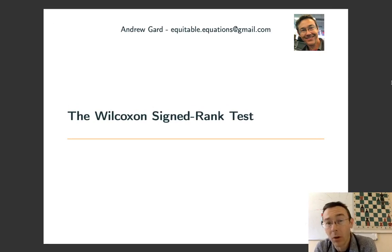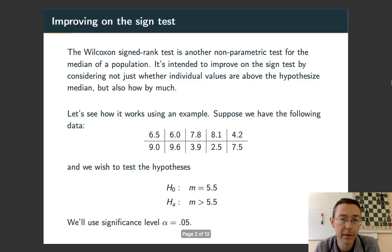Hey everybody. Today we're talking about the Wilcoxon signed-rank test. This is another non-parametric method for testing hypotheses about the median of a population. It's supposed to be an improvement upon the sign test that we saw previously, insofar as it's going to consider not just whether values are above and below the hypothesized median, but also considering by how much they might be.